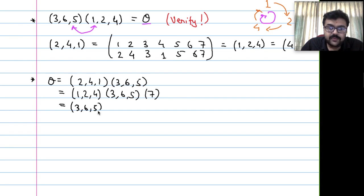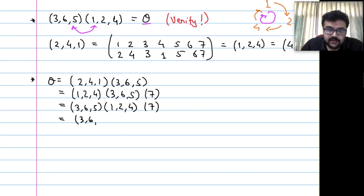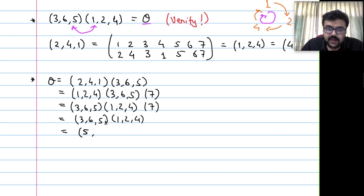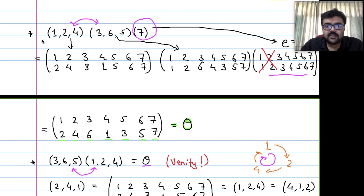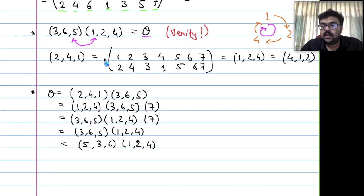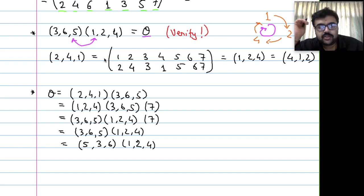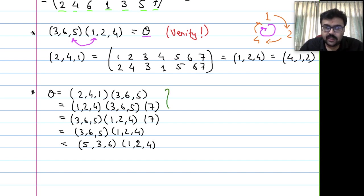I can write theta as (1,2,4)(3,6,5), or (1,2,4)(3,6,5)(7) including the 1-cycle, or (3,6,5)(1,2,4), or starting from 5: (5,3,6)(1,2,4). If we multiply any of these expressions, written as permutations, we get theta. The expression is not unique.